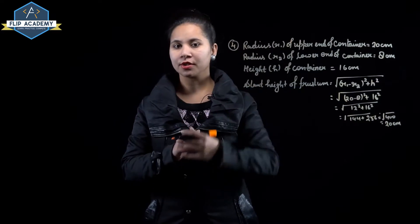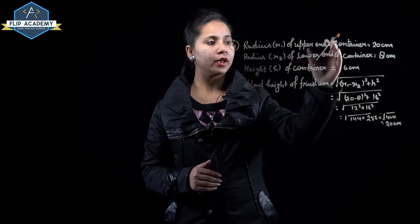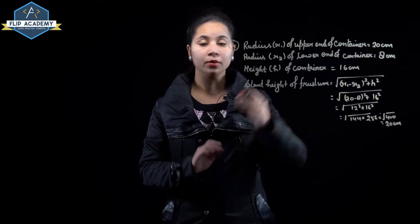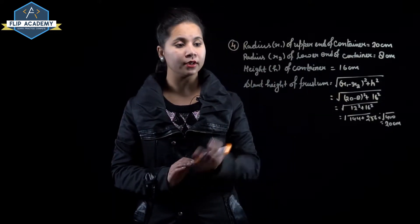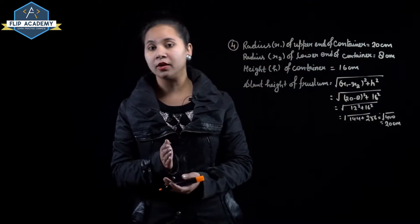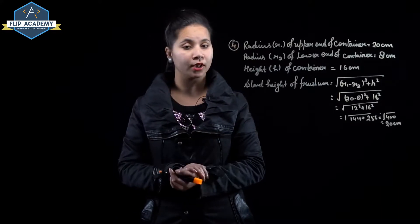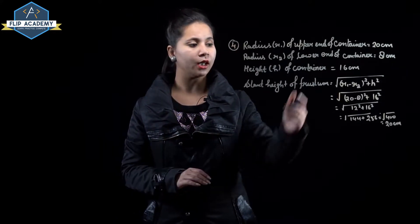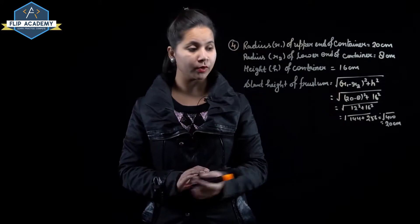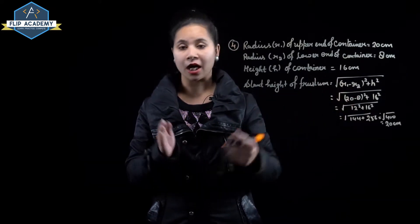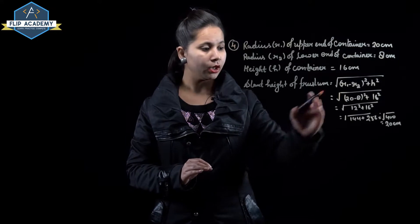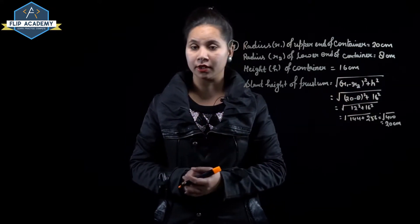Radius of upper end of container equals 20 centimeter, radius of lower end equals 8 centimeter, and height of container equals 16 centimeter. We can find the slant height: slant height equals square root of r1 minus r2 whole square plus h square. With r1 equal to 20 and r2 equal to 8, this gives square root of 20 minus 8 whole square plus 16 square, equal to square root of 12 square plus 16 square.